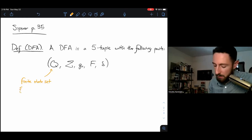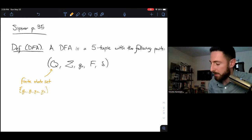The first part, Q, is a finite state set. A finite state set might look like something like {Q0, Q1, Q2, Q3}. It's just a list of all the states that are in our DFA.